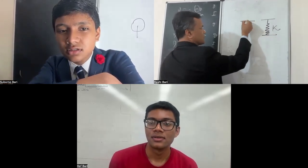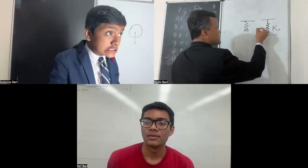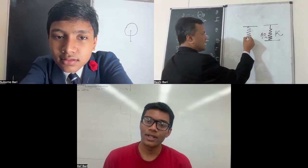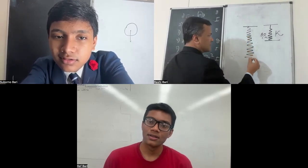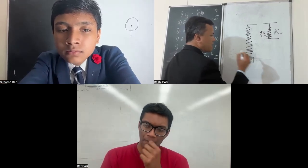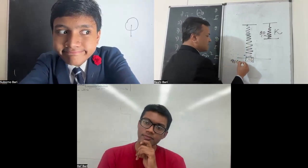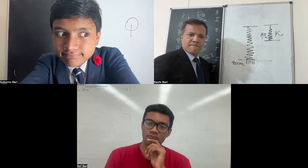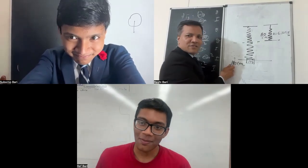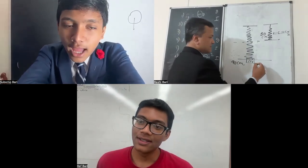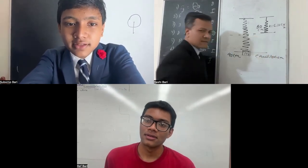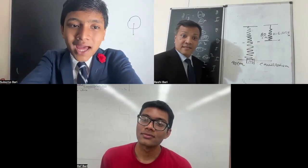So I'm going to say this is 50 centimeters in length. And due to M, this is 90 centimeters. I'm going to give you the K. You call this one equilibrium, is that right? Yes. Because the restoring force of the spring is equivalent to the gravitational force of the mass.